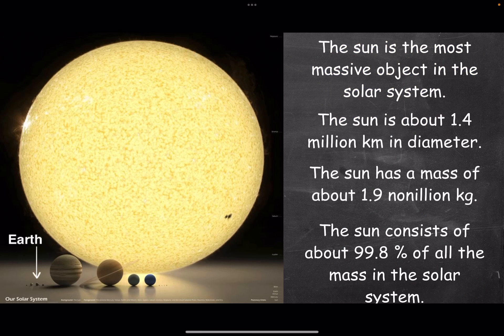The Sun consists of about 99.8% of all the mass in the solar system. That's pretty much all the mass, right? Because only 0.2% is left to share amongst all the planets, their moons, everything.